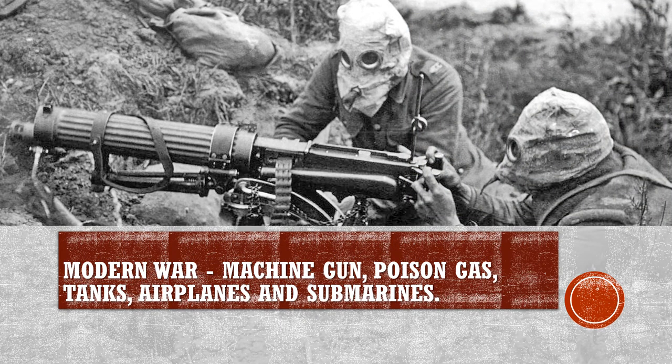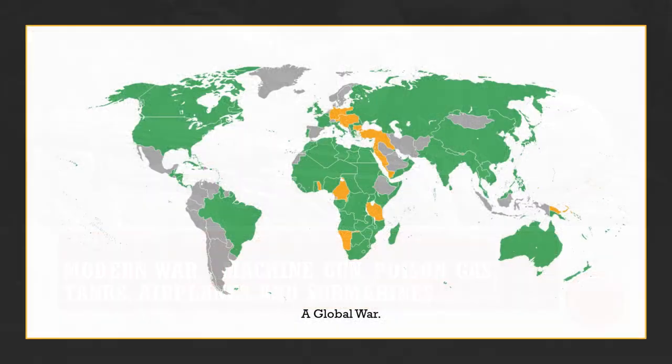World War One was a thoroughly modern war. It was the first war with widespread use of the machine gun; it used poison gas; it saw the introduction of tanks for the very first time; and it saw the introduction of airplanes and even submarines. This was a thoroughly modern conflict.